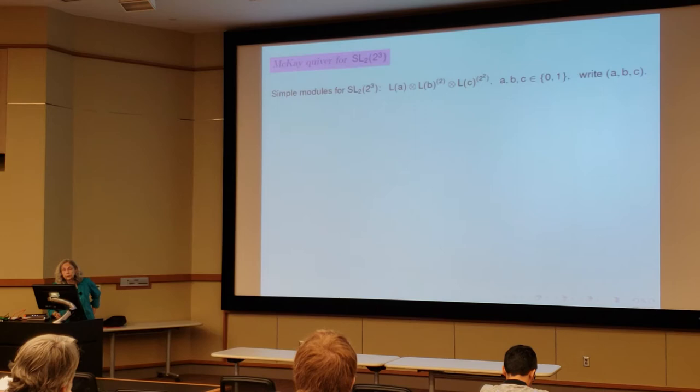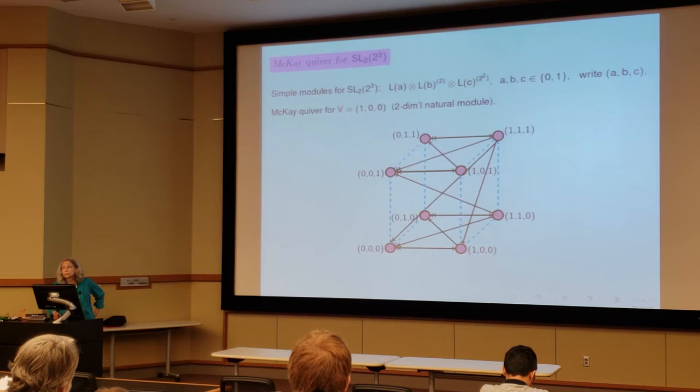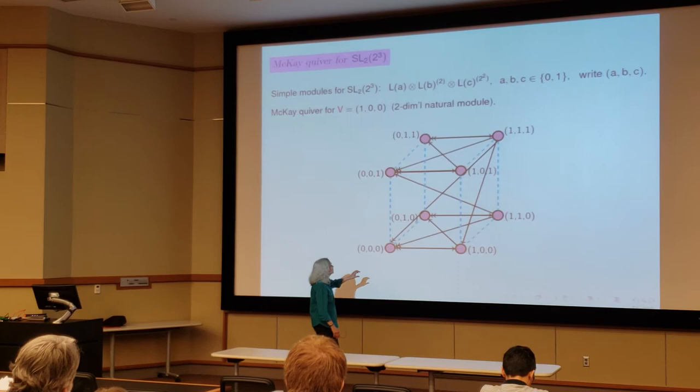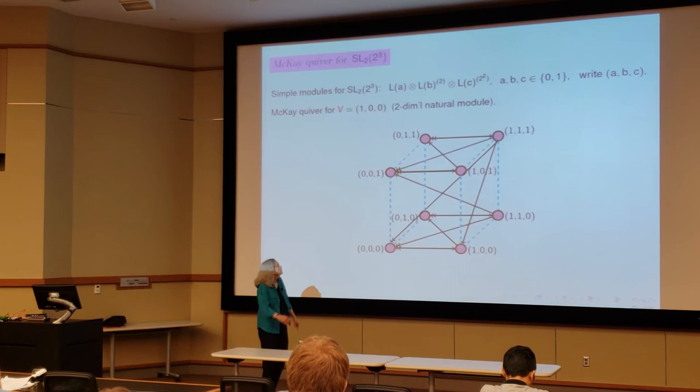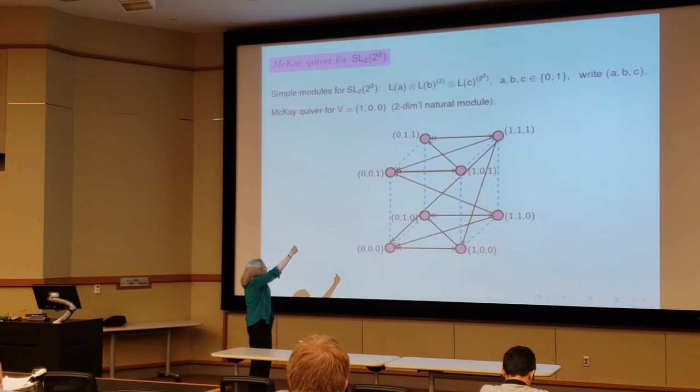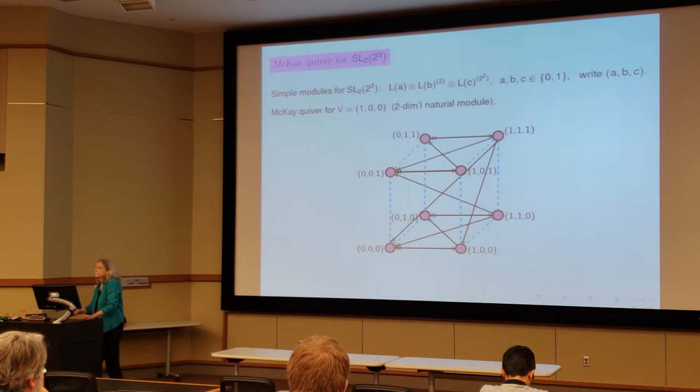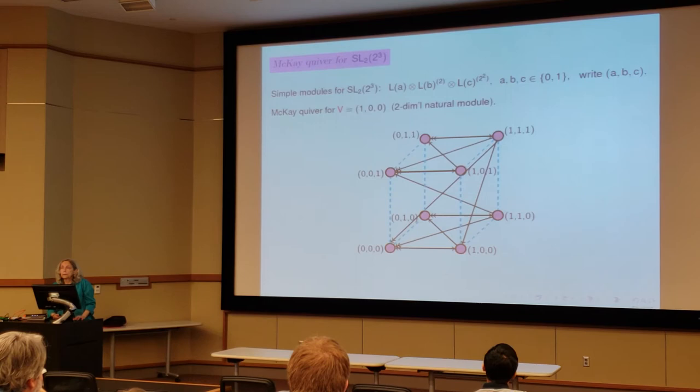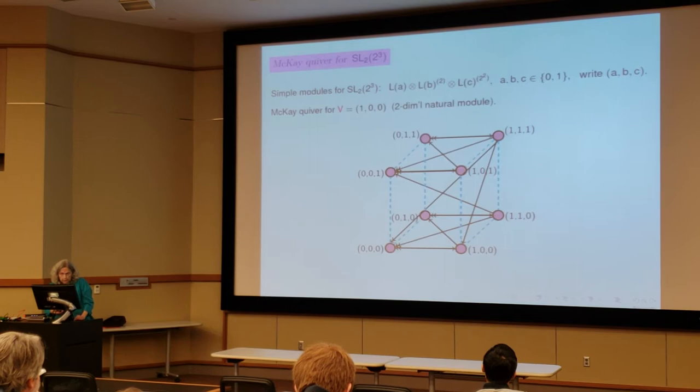Here's another example. SL2, 2 cubed, the Mackay quiver for the two-dimensional natural module. The dotted lines are there just to give us a little frame of reference. And you see, coming into here, there are lots of arrows coming in. Again, the Steinberg module, which is up there, it's got lots of arrows coming in. Now you can do this with any representation you want. You can label the nodes with symbols. You can label the nodes with projectives if you want. And tensor with projectives module. You can use tilting modules. You can do all sorts of things.